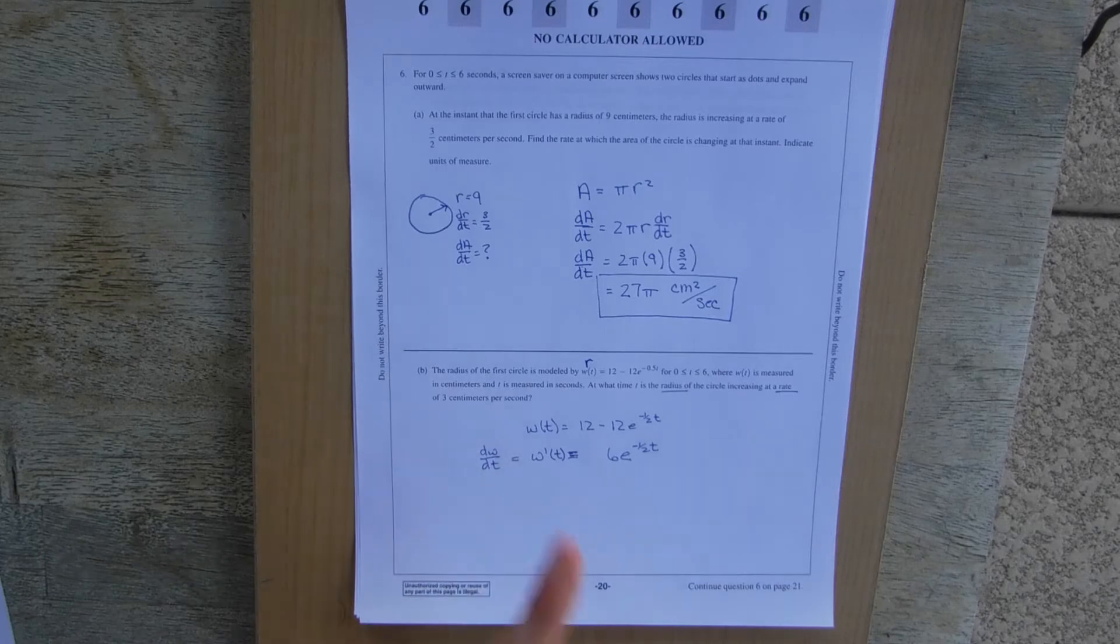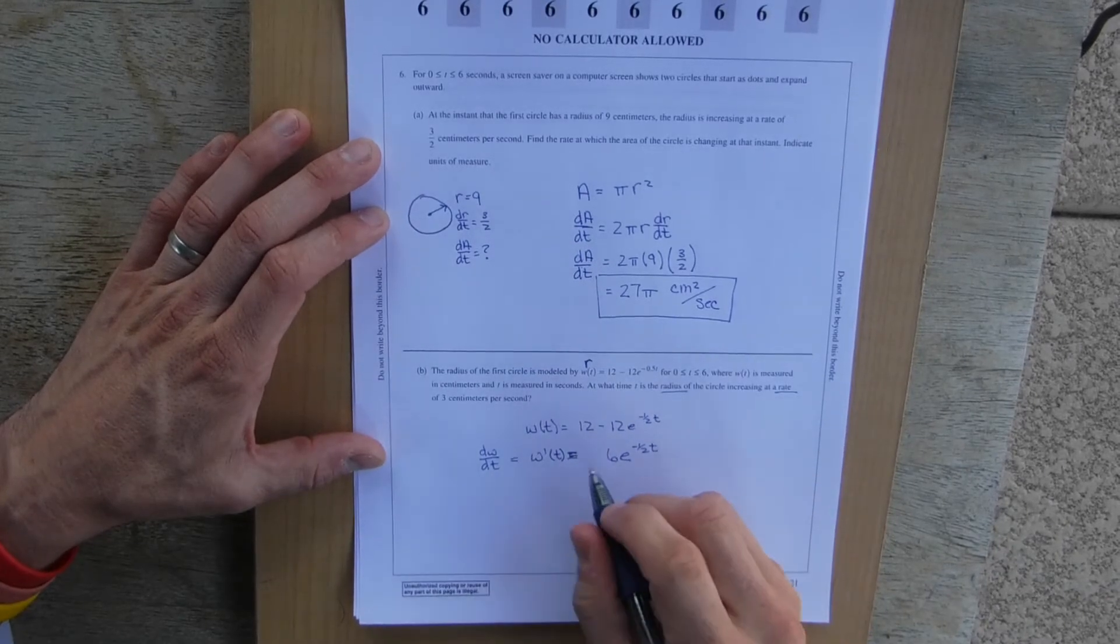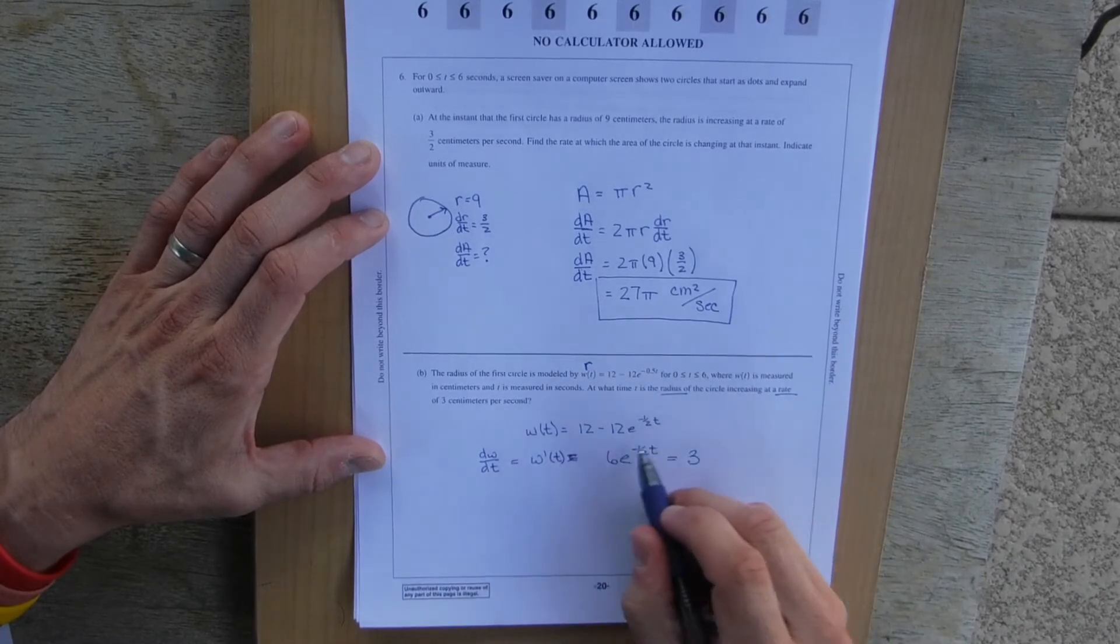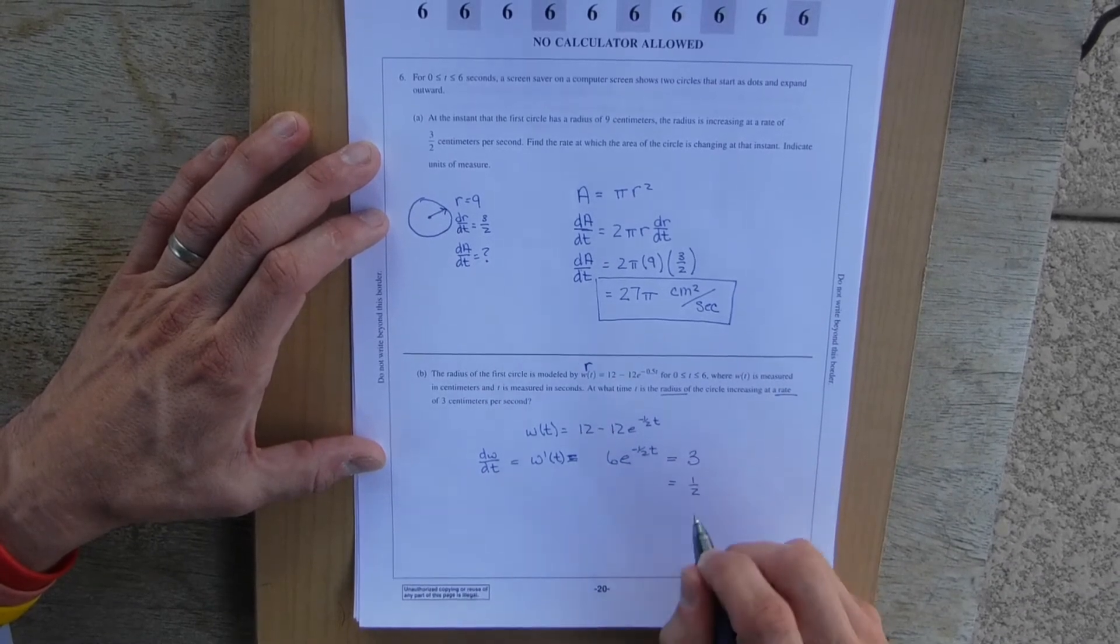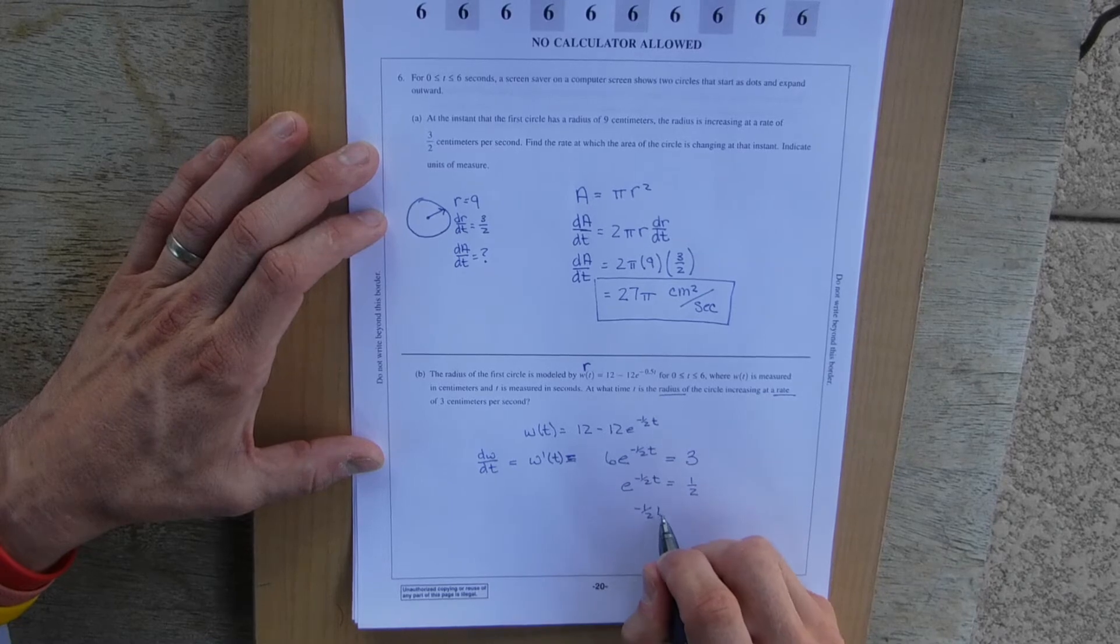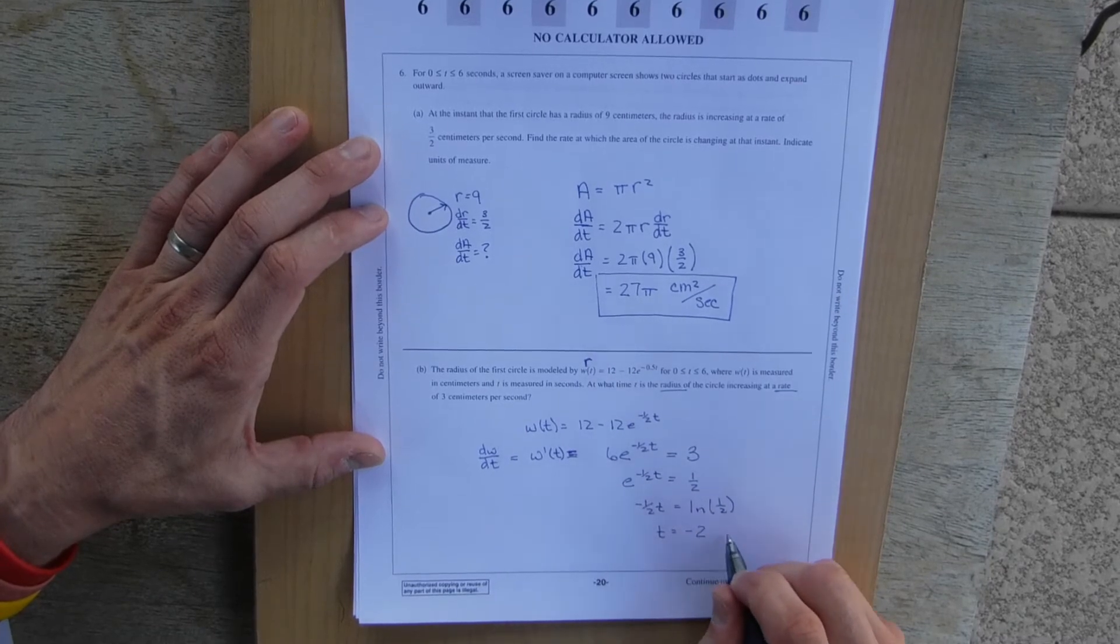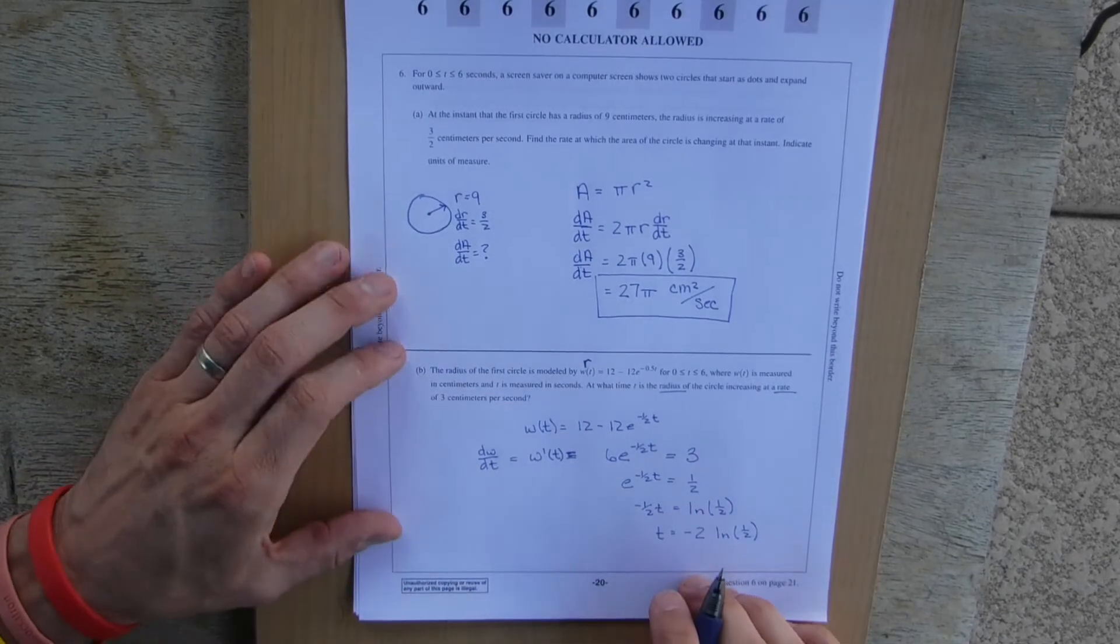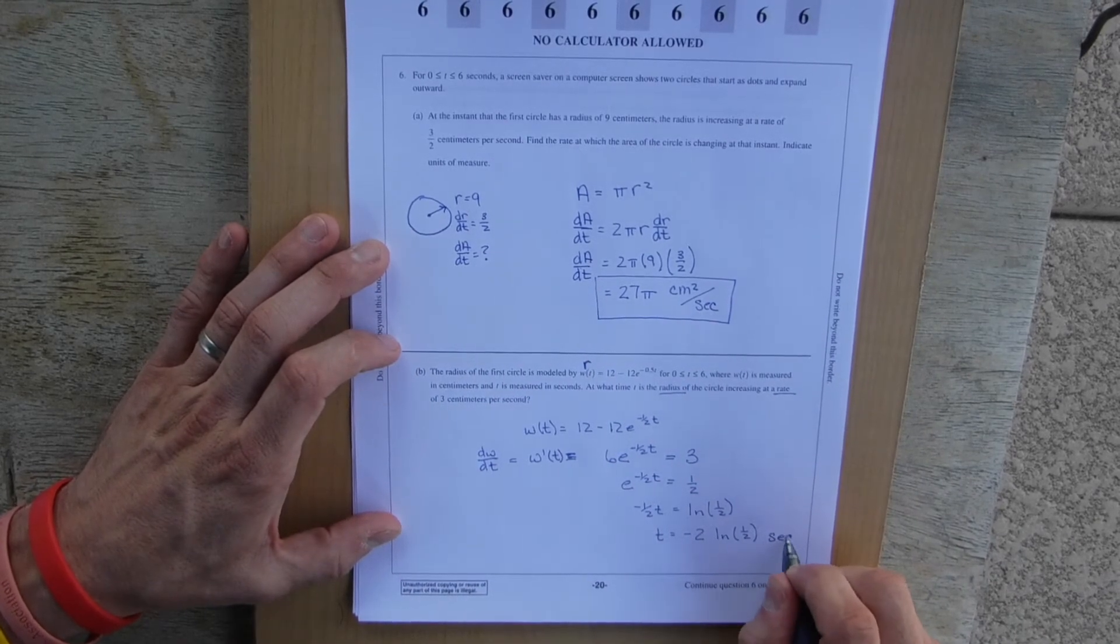Alright, so that's the rate of the radius. So now they want to know when is the rate equal to 3 centimeters per second? So when is the rate equal to 3 centimeters per second? So this is their math problem. So we divide by 6. Natural log. Multiply by negative 2.